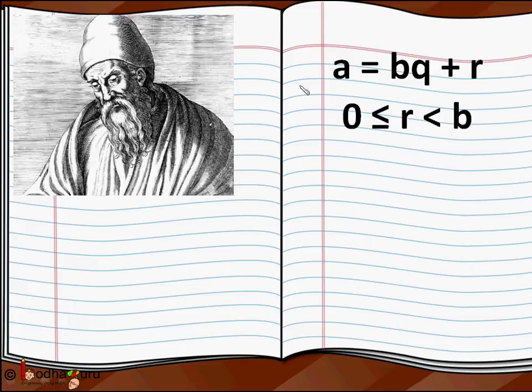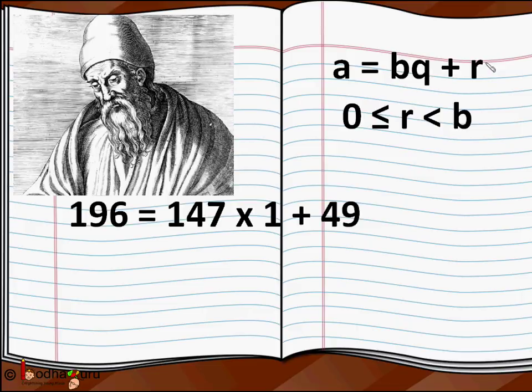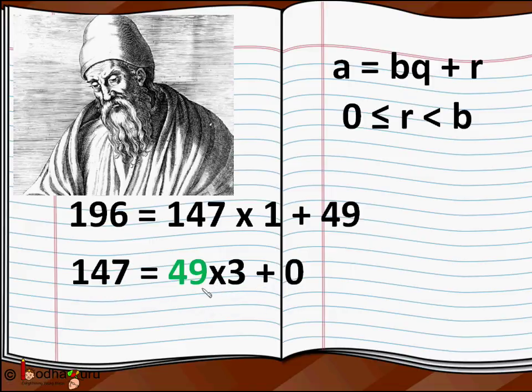We can easily find the HCF using Euclid's division algorithm. If we put 196 and 147 in Euclid's division lemma, we do 196 divided by 147 to get 196 = 147 × 1 + 49. Now we take 147 and 49, and we do 147 divided by 49 to get 147 = 49 × 3 + 0.